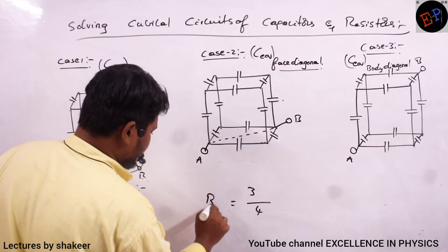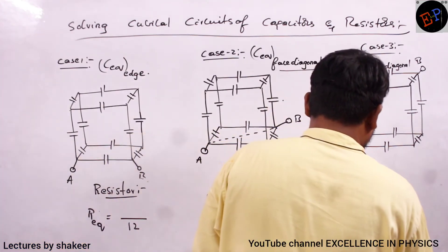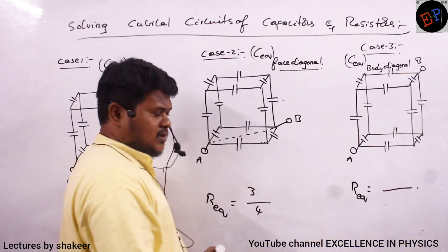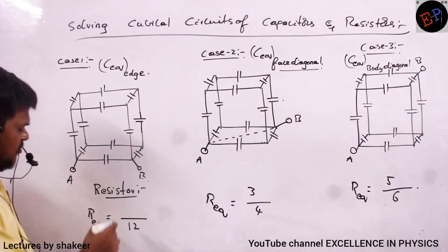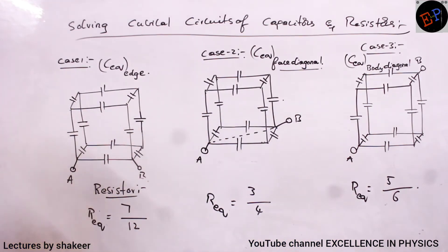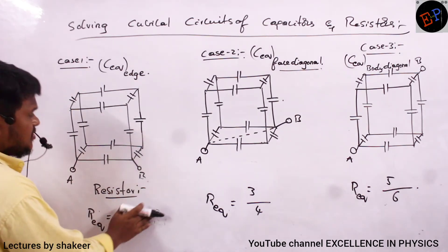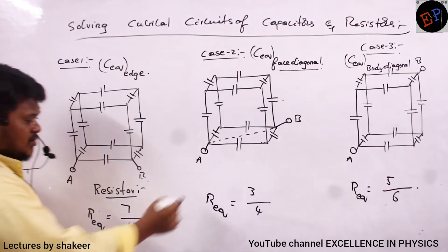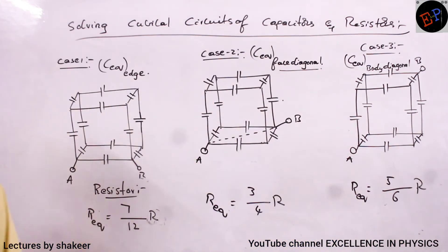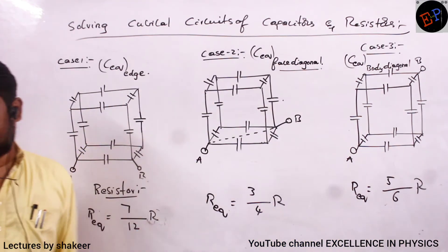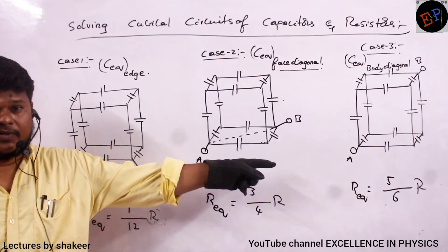So, here also, R equivalent. Then you draw one more dash here. R equivalent. 3, 4 completed. Now, 5, 6. Up to 6 completed. Then you write 7 here. So, 7 by 12 ohms R. If each resistor is R, then 7 by 12 R, 3 by 4 R, 5 by 6 R. So, this is the equivalent resistors for these respective connections. And you should remember this sequence also.